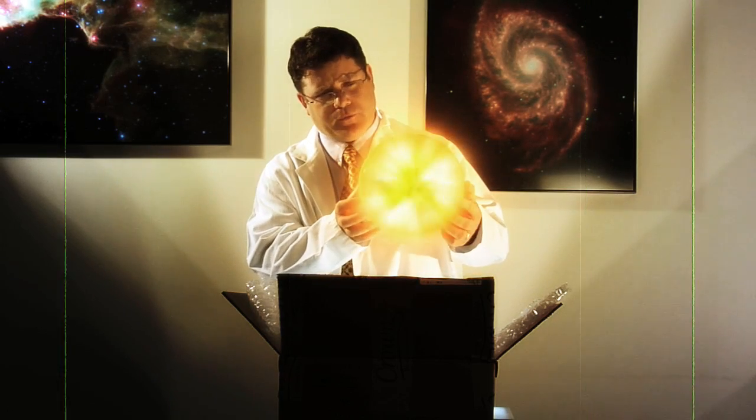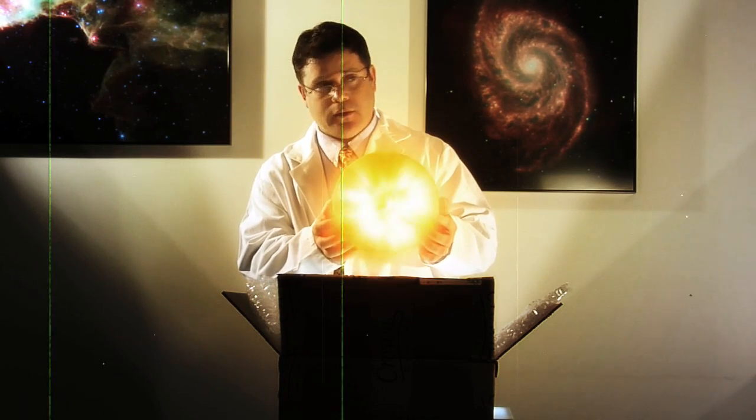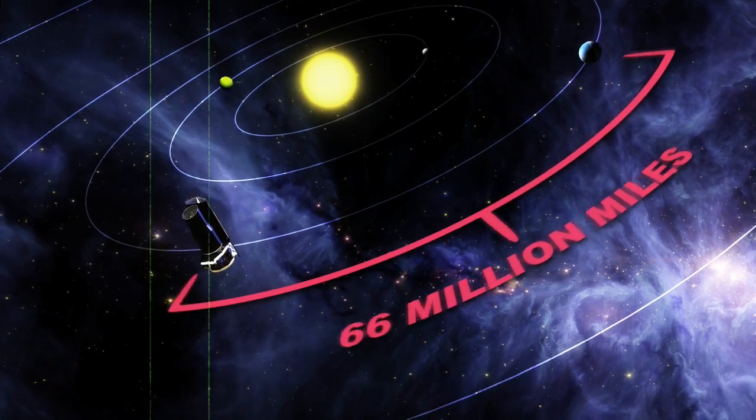The mystic sphere of Galvonium could magically keep Spitzer cool for eons if we could reach the telescope. We can't reach it. It's in an Earth-trailing orbit about 66 million miles away.